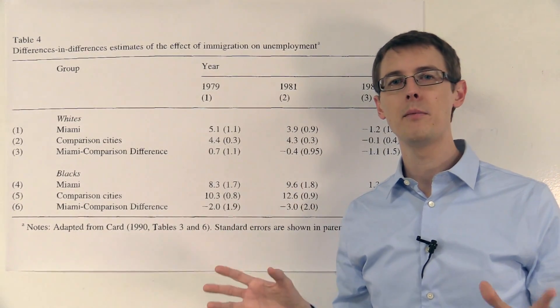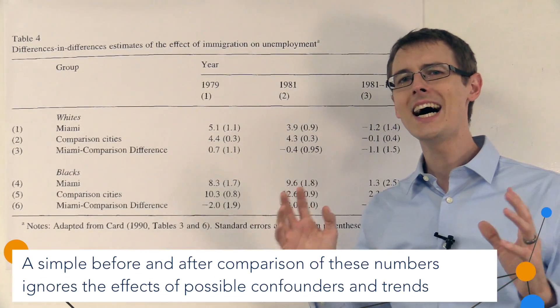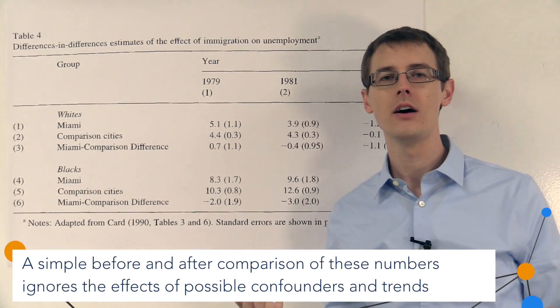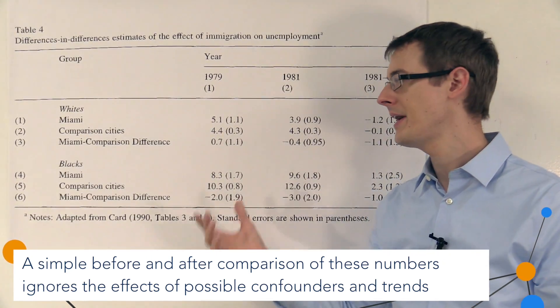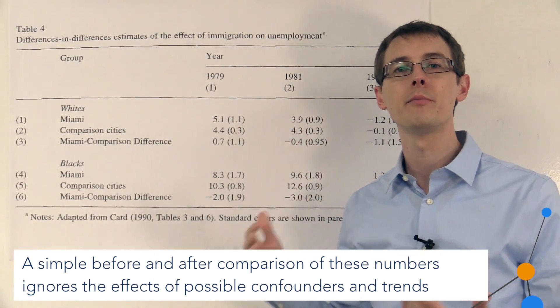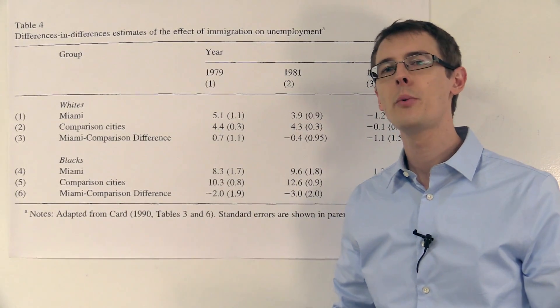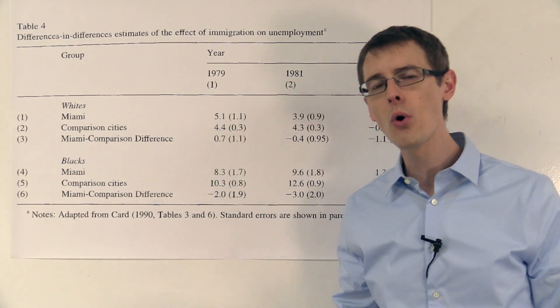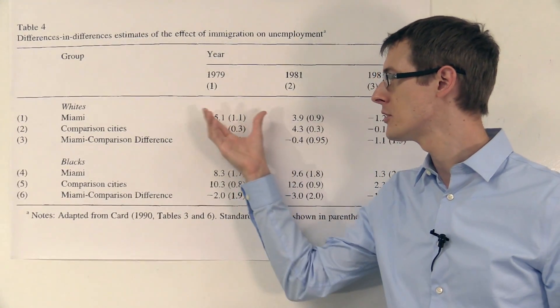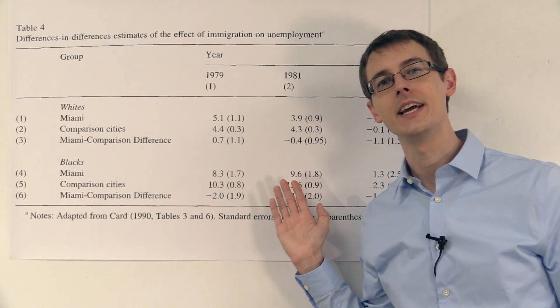Now, as we've talked about before, that's not really the conclusion we can draw. Because there might be other confounding variables that are changing over time that are actually driving these trends in unemployment rates for whites and blacks.